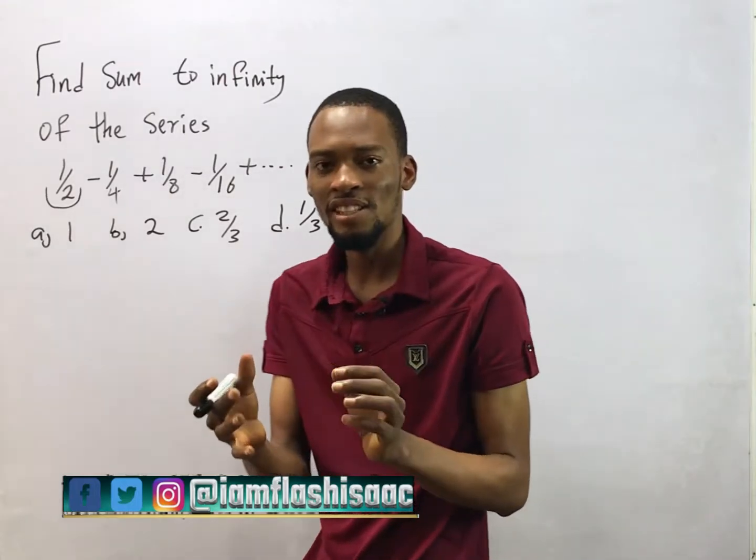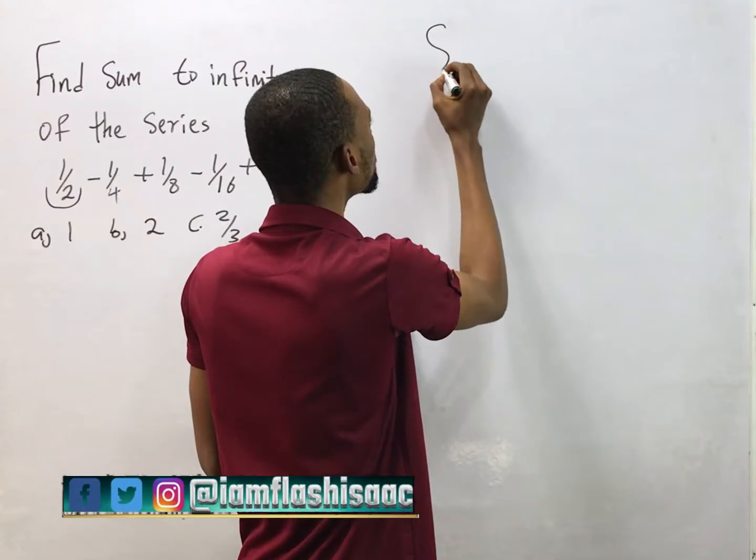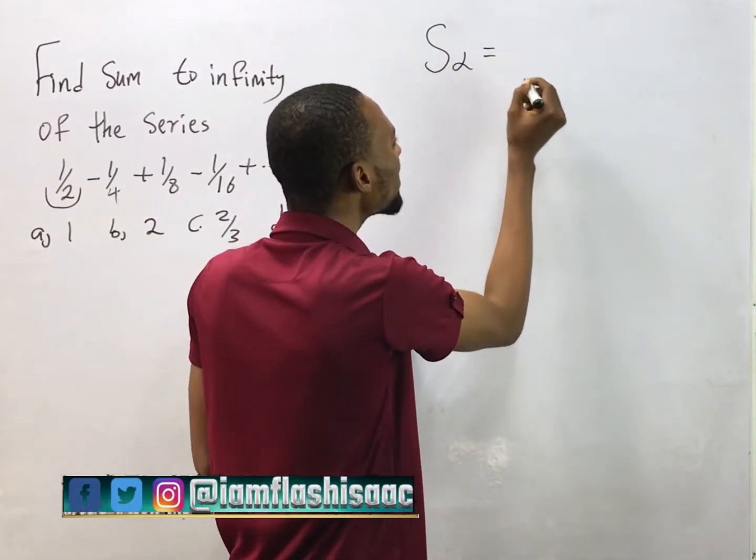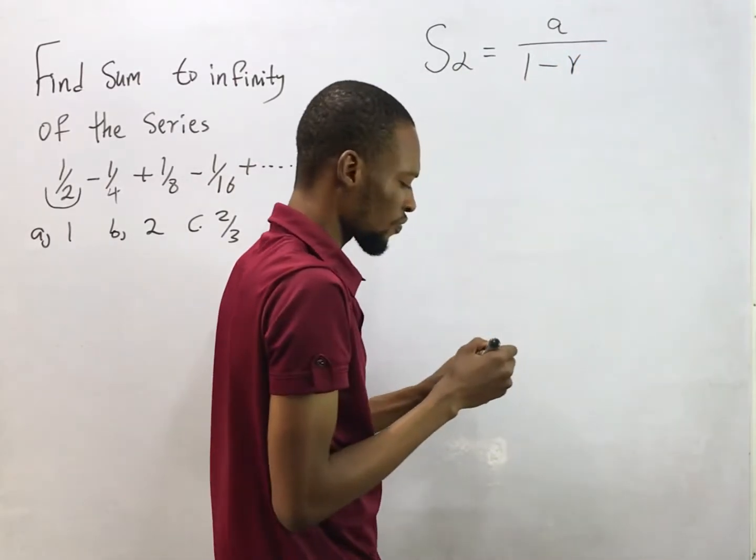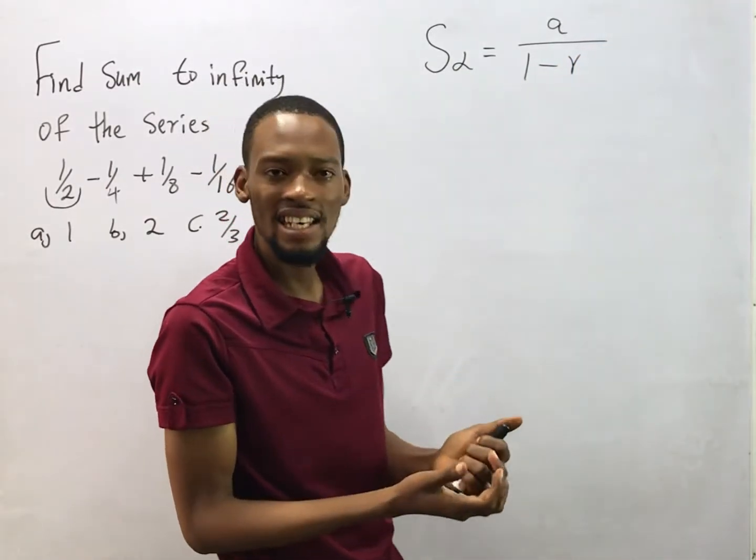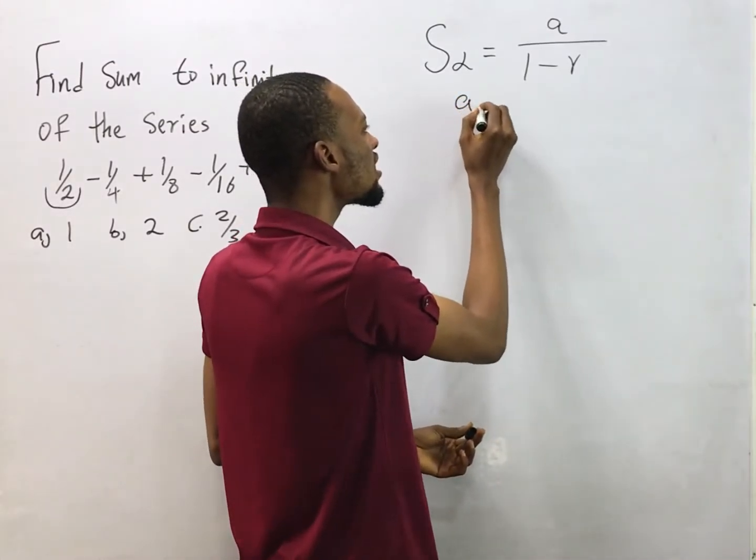What do you think is the correct answer? To find sum to infinity, sum to infinity is simply a/(1-r). What is a and what is r? a is simply